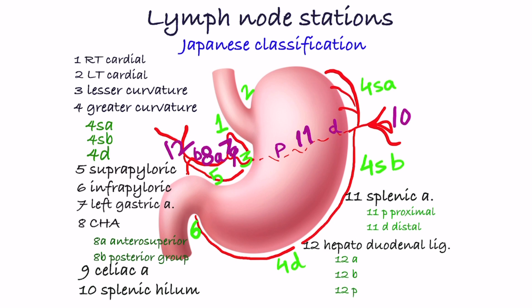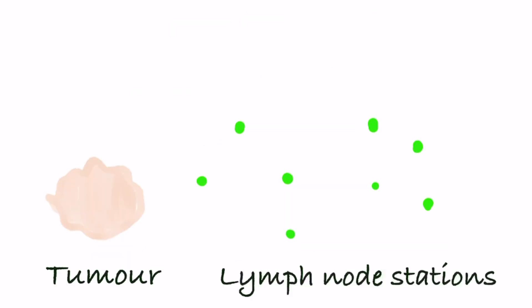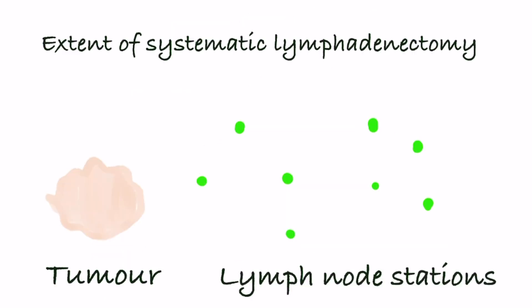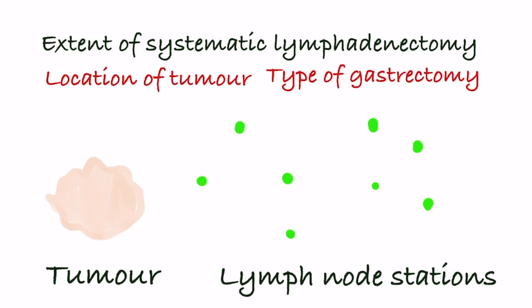The extent of systematic lymphadenectomy is defined according to the location of the tumor and type of gastrectomy done. Node stations further from the tumor are less likely to have malignancy, and those nearer are more likely. So those nearer will become D1 and those further away will become D2.